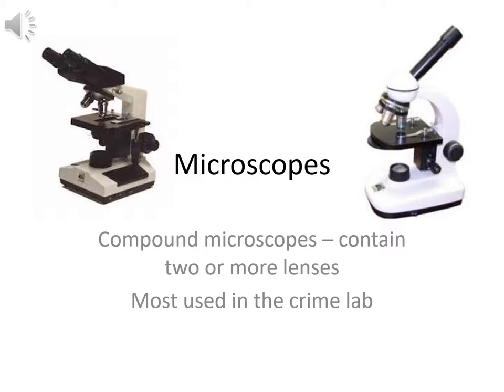Microscopic methods are important in a variety of forensic applications — in hair, fibers, and soil analysis. Even compound light microscopes, which are relatively inexpensive and familiar from middle or high school, are still among the most valuable instruments in forensics. They don't provide elemental analysis like more expensive instruments, but they remain useful and commonly used in crime labs.